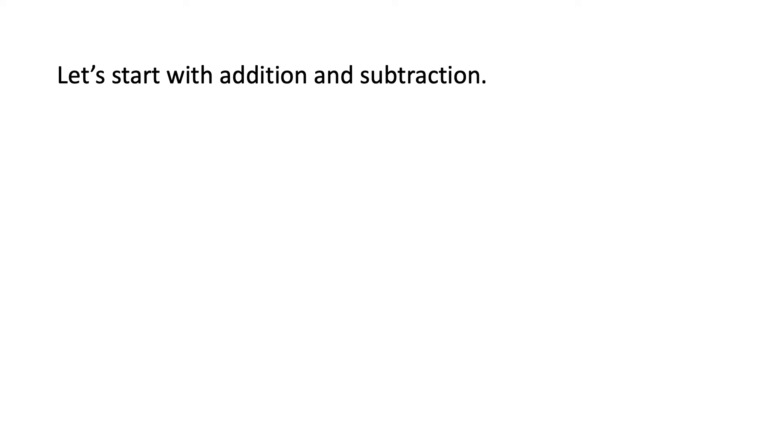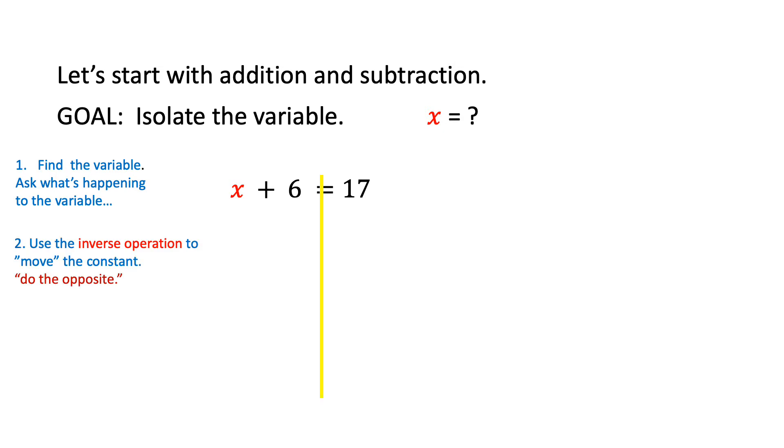Let's start with addition and subtraction. Here we have x plus 6. The goal here is to isolate the variable to solve for x. We're going to draw a line through the equal sign to make sure we're working on the correct side of the equation. Find the variable and look at x. What's happening to x? We're adding 6.